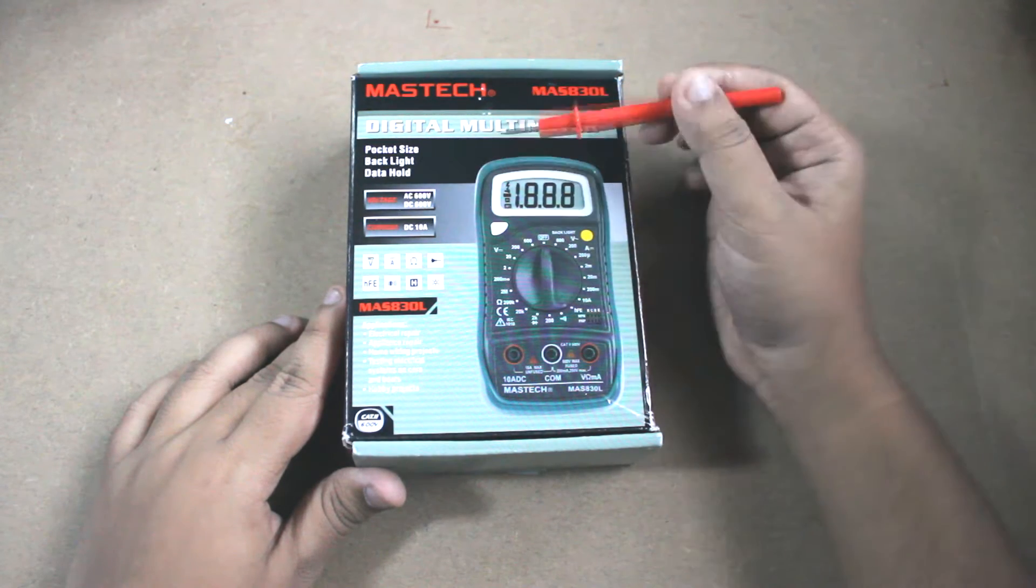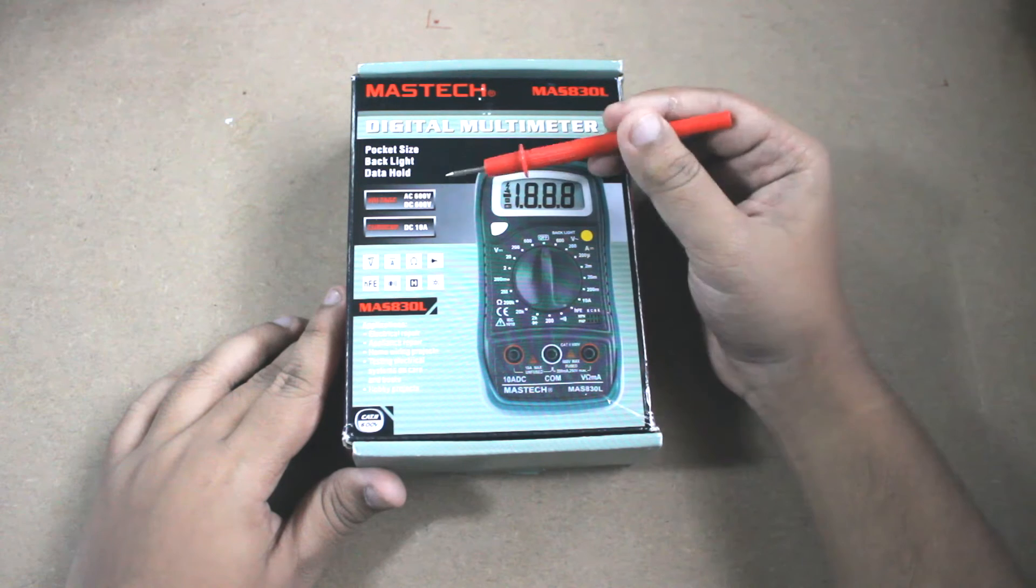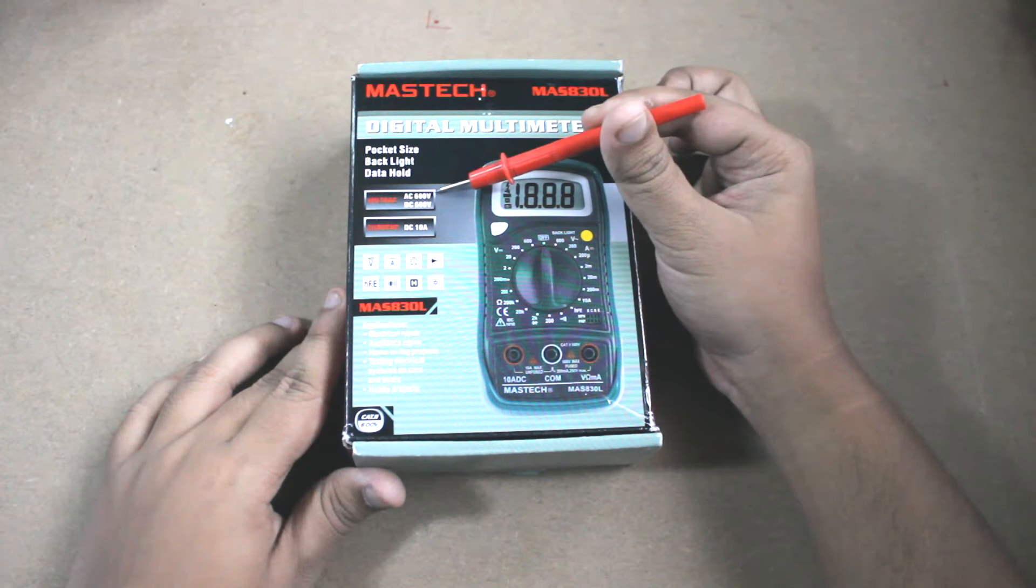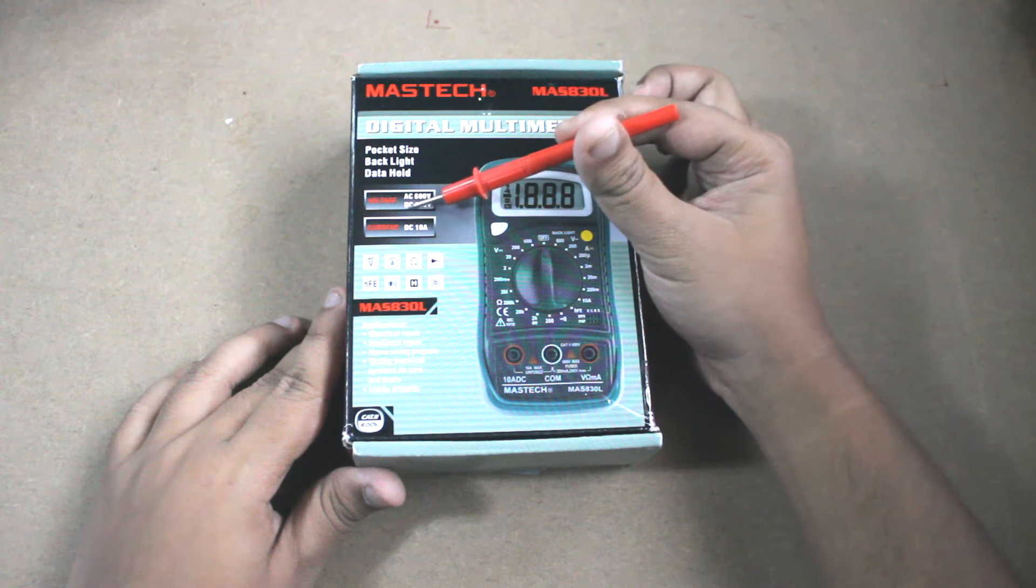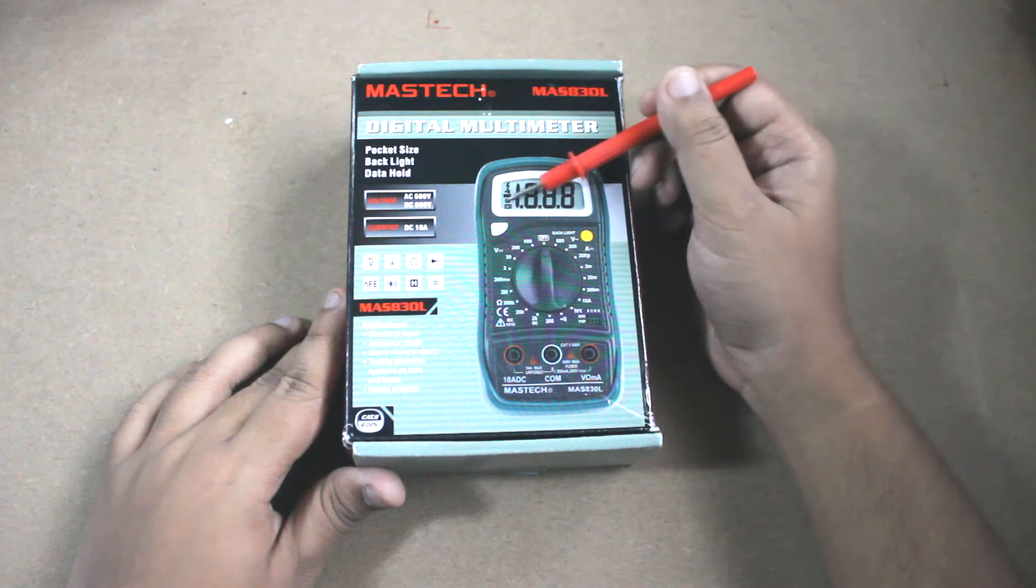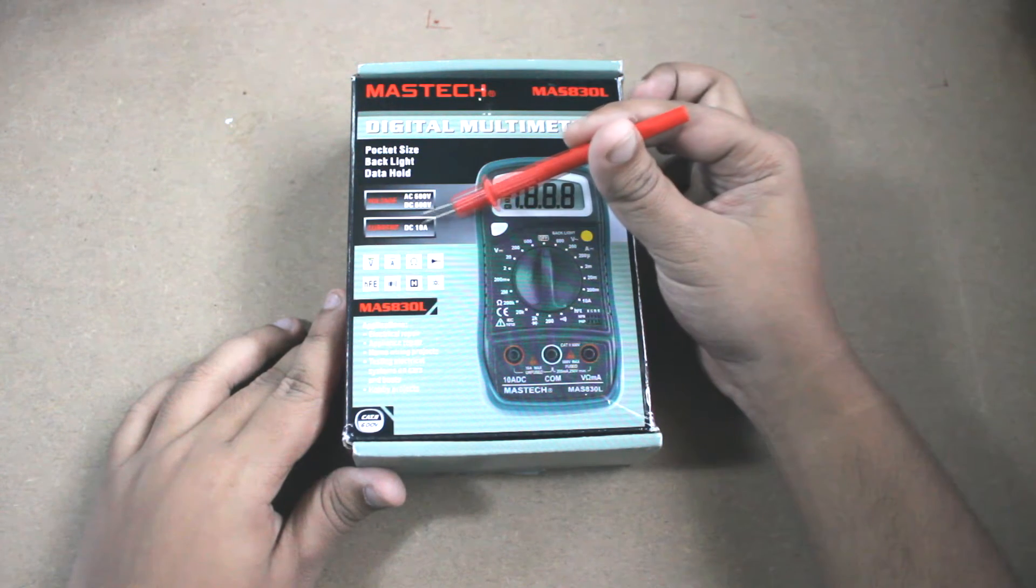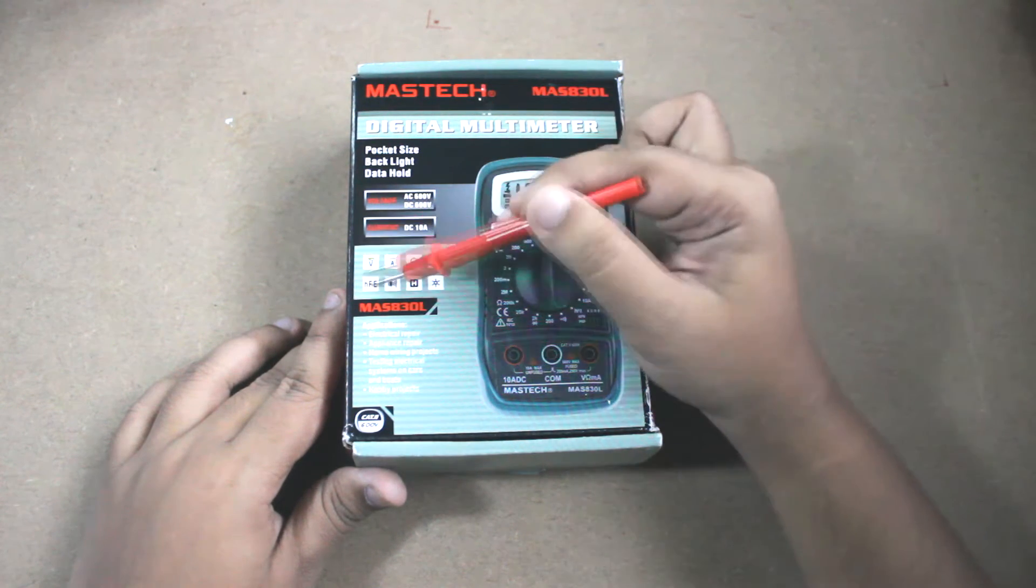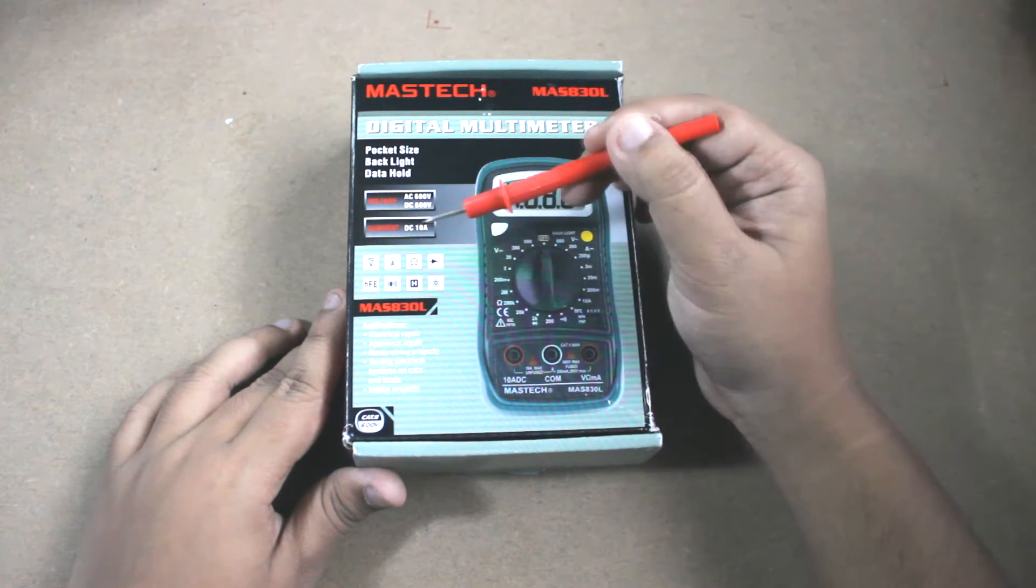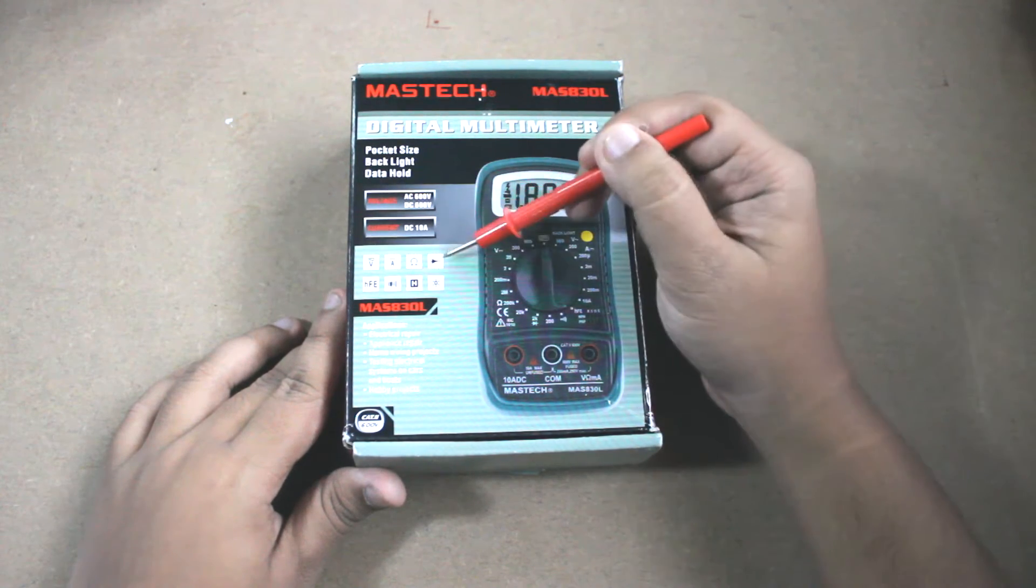It has a backlit display, it can hold the data, can read AC voltage up to 600 volts, can read DC voltage also up to 600 volts, can read DC current up to 10 amperes.